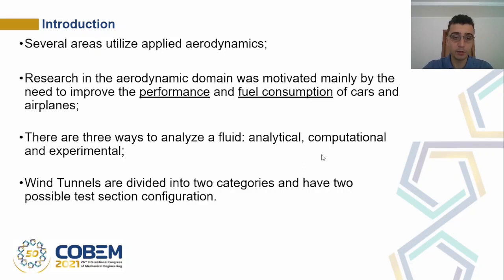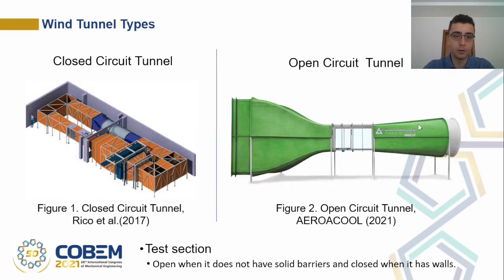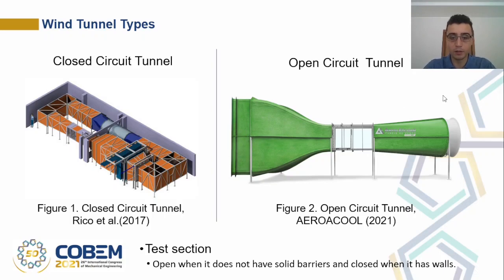Wind tunnels are divided into two categories and have two possible test section configurations. The closed circuit tunnel, where the air recirculates inside it, and the open circuit, where the air does not recirculate inside it. The test chamber is open when it does not have solid barriers, and closed when it has walls.